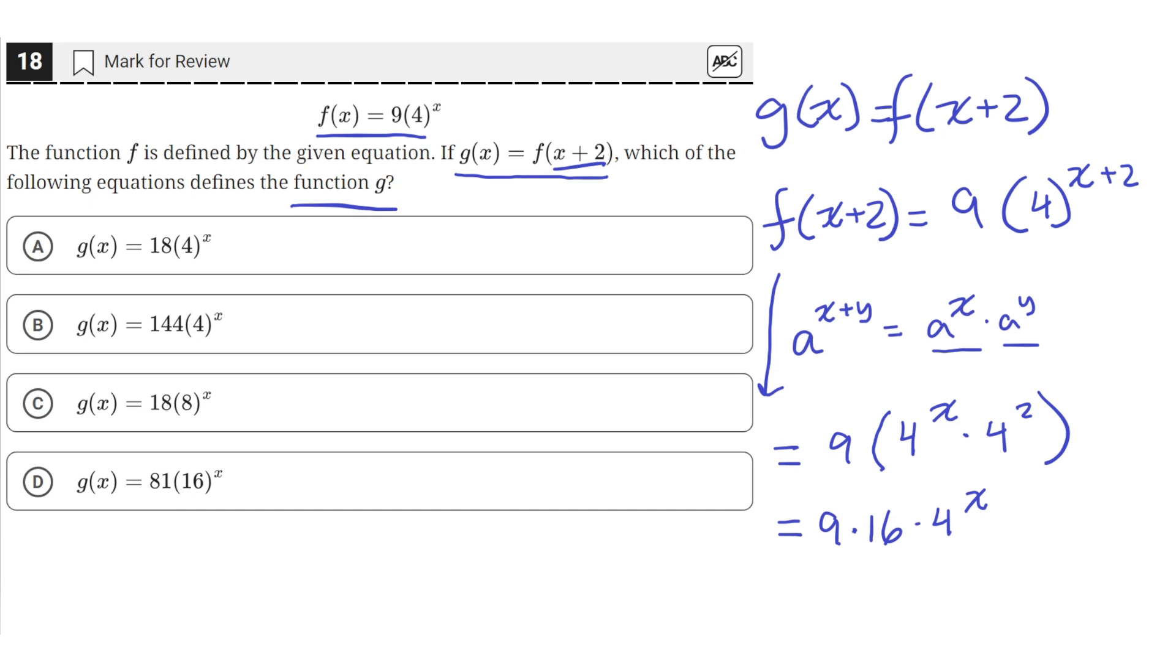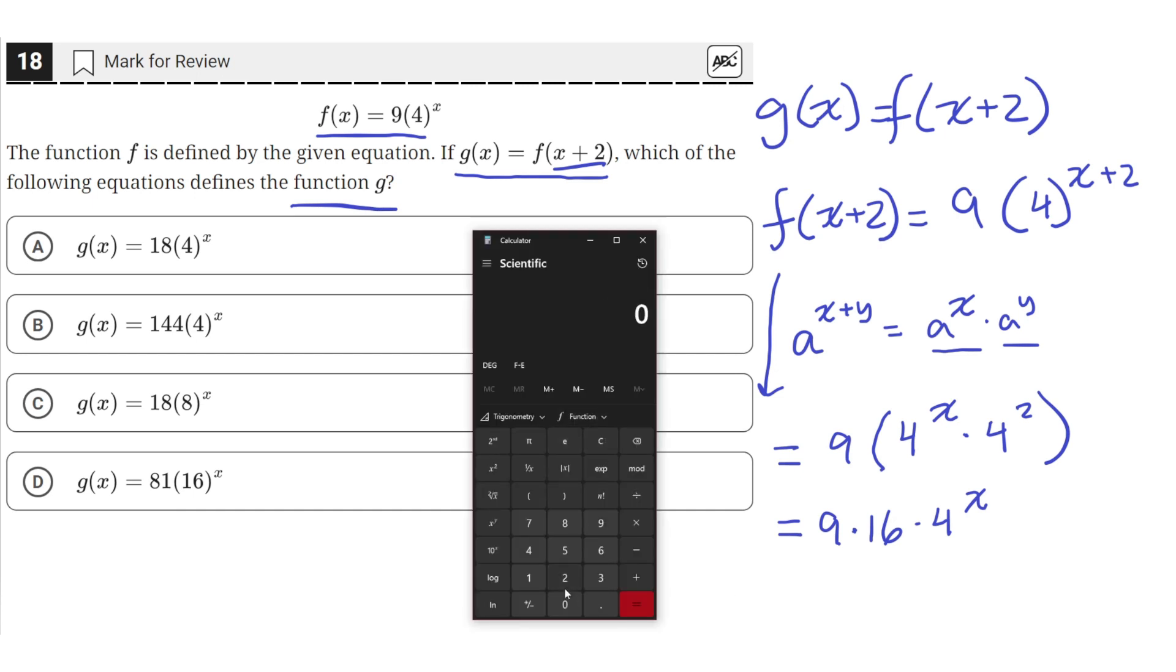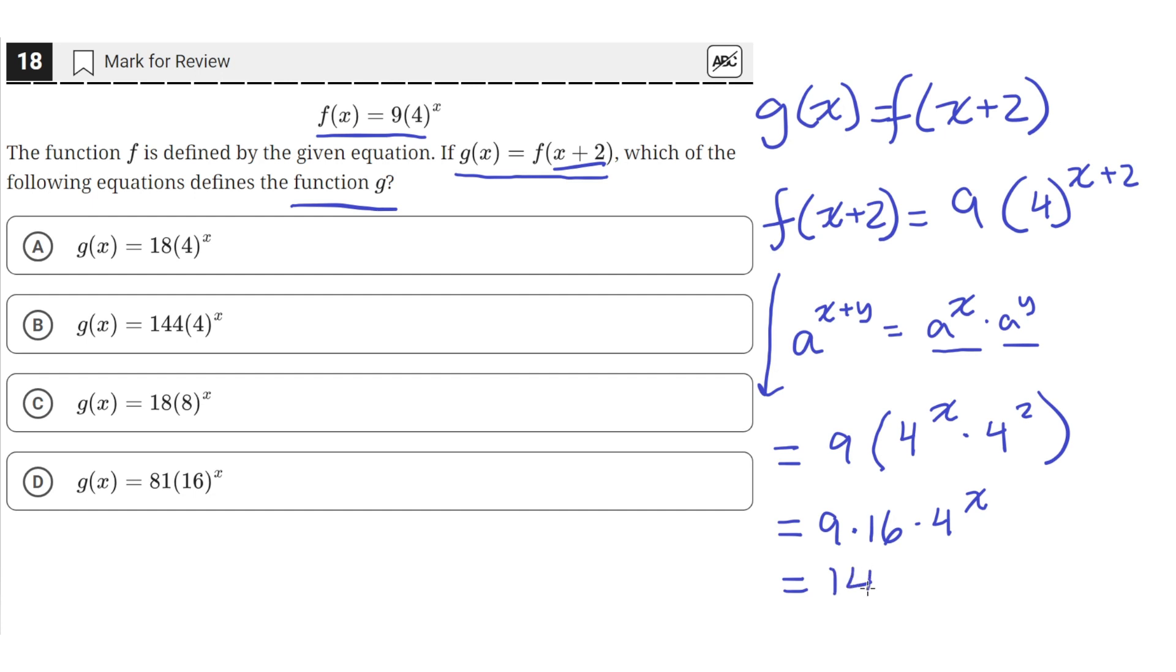We can just put that into our calculator. 9 times 16 is 144. So this simplifies to 144 times 4 raised to the x, which is answer choice B.